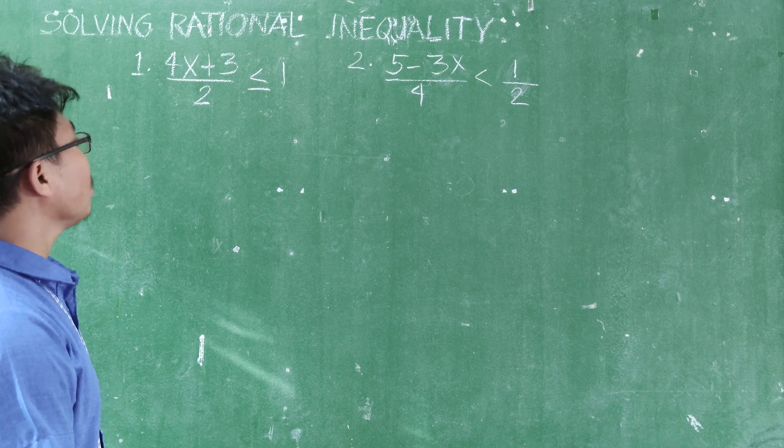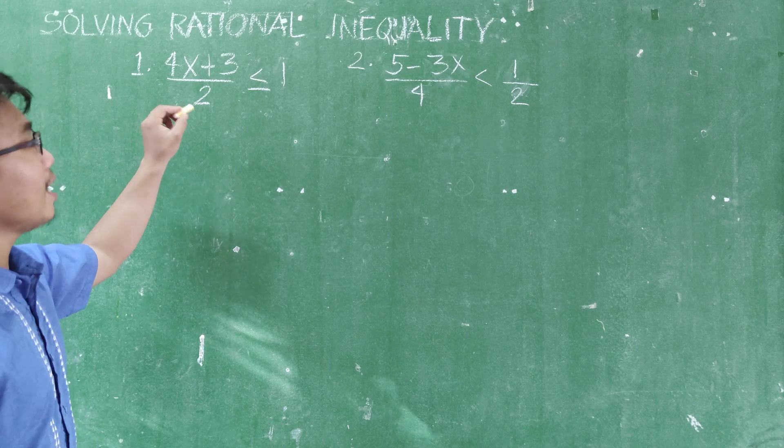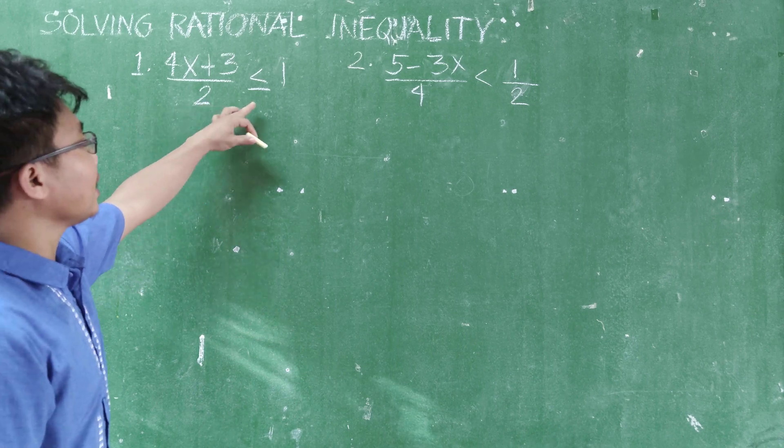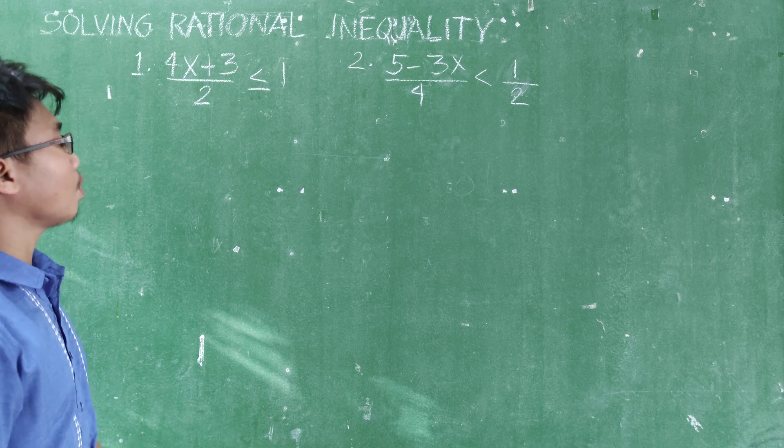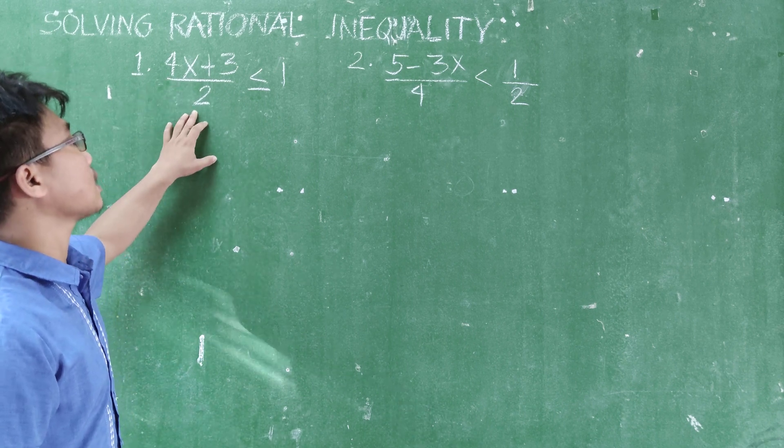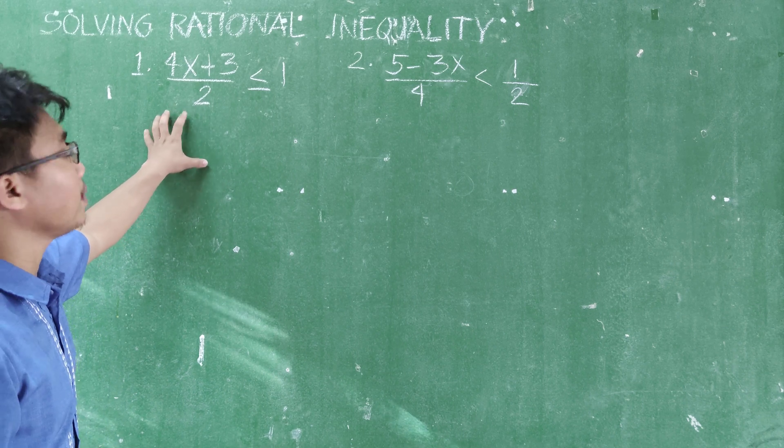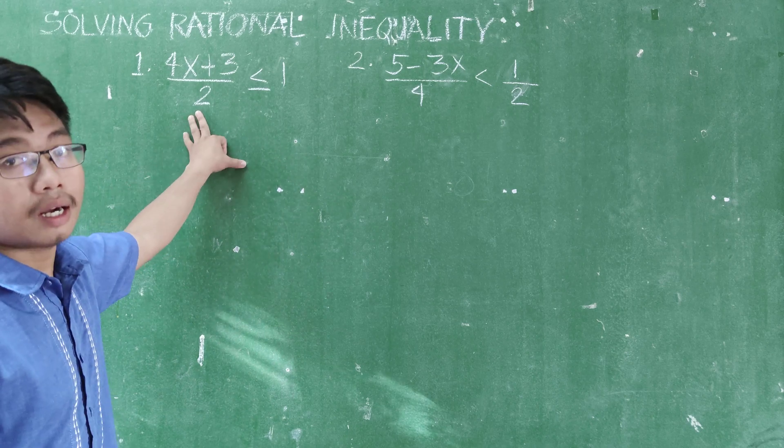Let's have example number 1. So 1, 4x plus 3, all over 2, less than or equal to 1. So you can see the inequality symbol is used here. How to solve for the value of x? First is to look for the LCD. Since rational, you have a fraction here with a denominator. So the LCD here is 2.